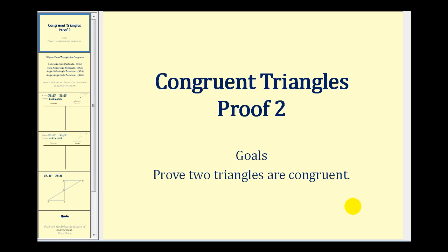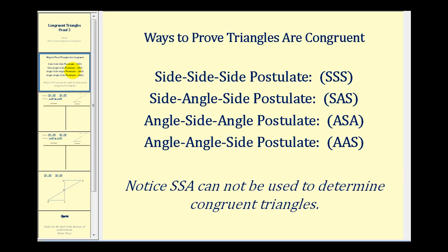Welcome to a second example of proving two triangles are congruent. A quick review of the ways to prove triangles are congruent: we have side-side-side, side-side-angle, side-angle-side, angle-side-angle, and angle-angle-side.